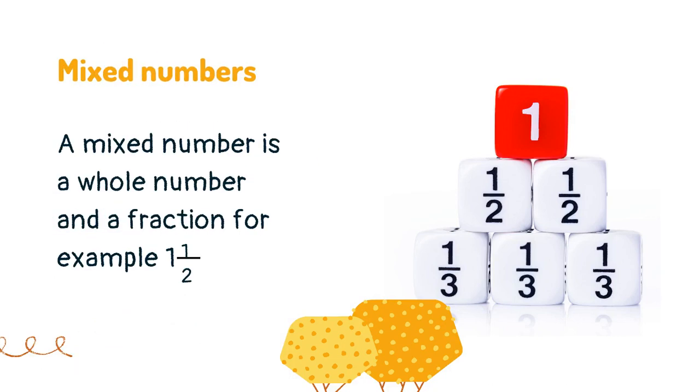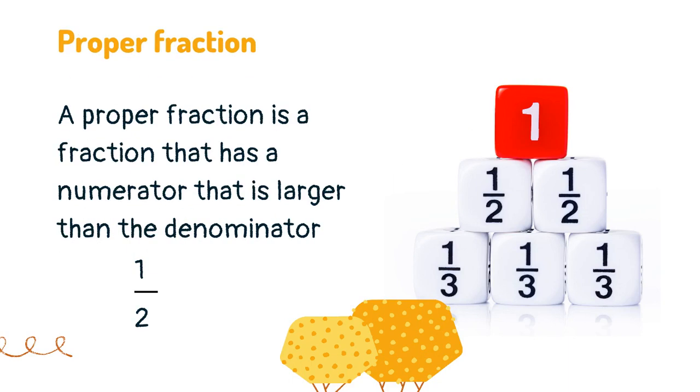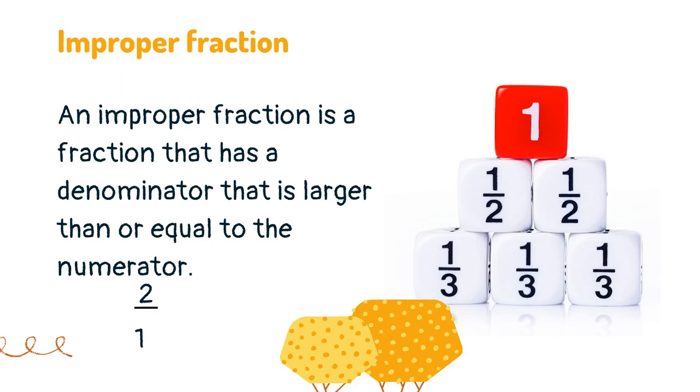A mixed number is a whole number and a fraction. A proper fraction is a fraction that has a numerator that is larger than the denominator. An improper fraction is a fraction that has a denominator that is larger than or equal to the numerator.